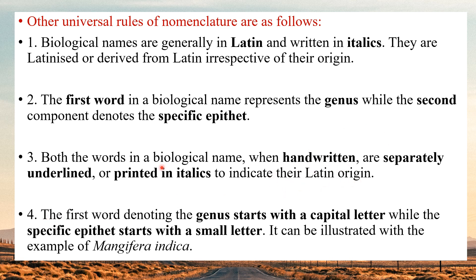If it is printed, it should be in italics — this indicates their Latin origin. The first word denoting the genus starts with a capital letter. So when we write Mangifera indica, 'Mangifera' — the genus — is written with a capital first letter, and 'indica' — the specific epithet — is written in small letters. If we write it by hand, we separately underline 'Mangifera' and then 'indica' with a space between them.